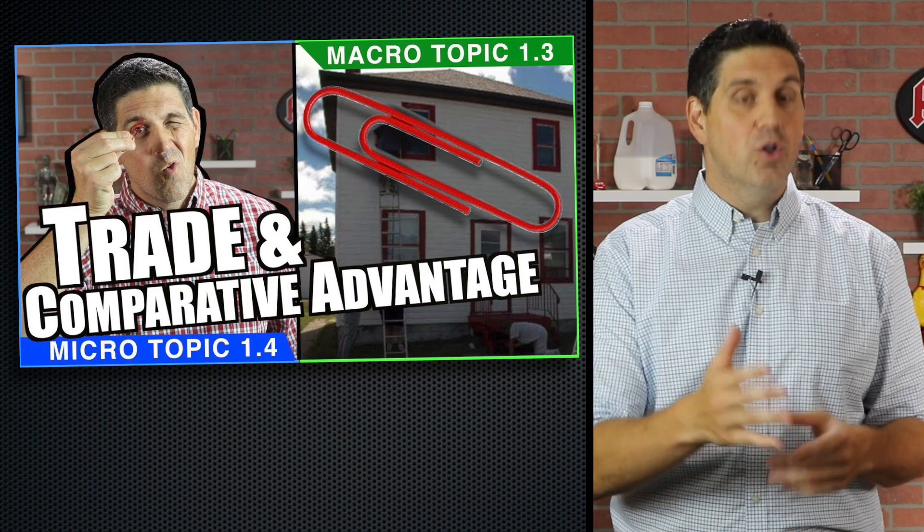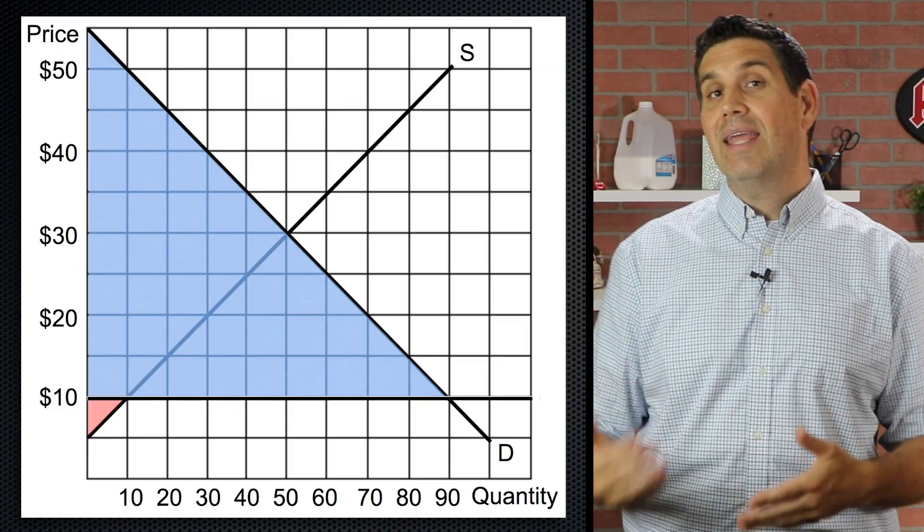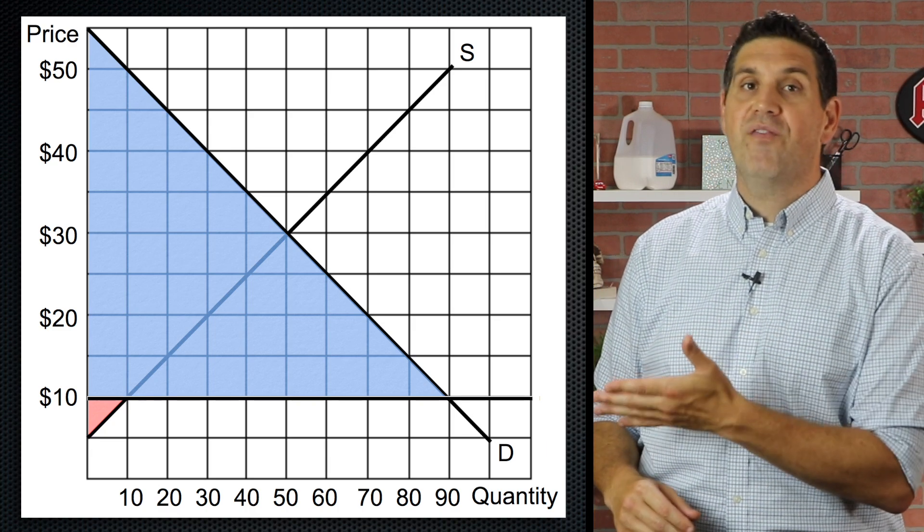So there it is. Back in unit one, you learned about comparative advantage and why countries should specialize in trade. And here in unit two, you're showing that concept on a graph showing that consumers benefit from international trade. And now that's happening more than ever because of Malcolm McLean. So what object am I going to put on the wall behind me to help you remember the idea of international trade, consumer producer surplus and Malcolm McLean?